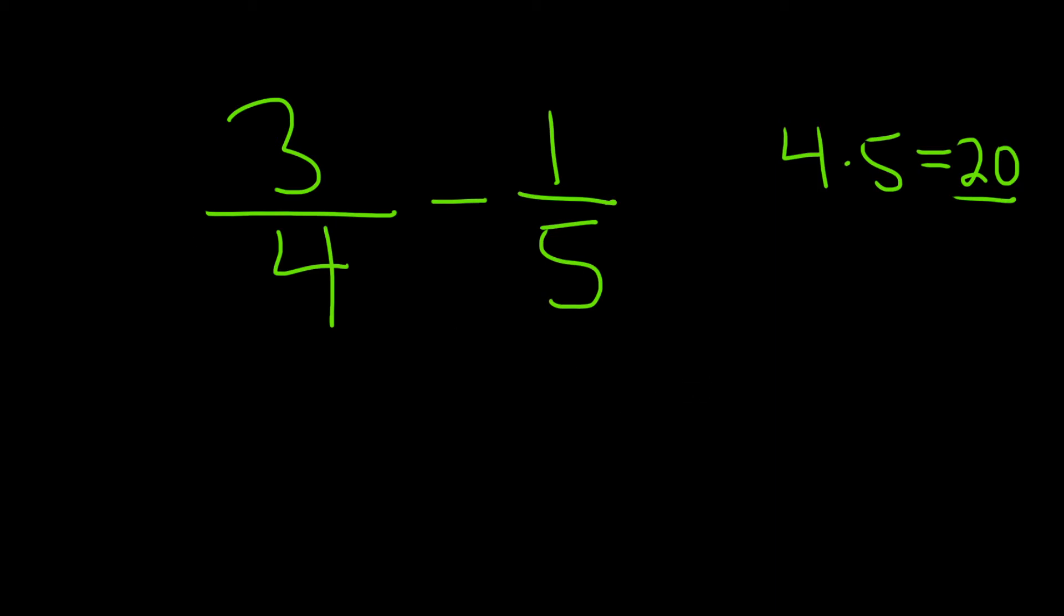So now what you do is you go to each fraction and you multiply by what's missing. So what do you need here with the 4 to get a 20? Well, you need a 5. So you multiply by 5 over 5, just like that.